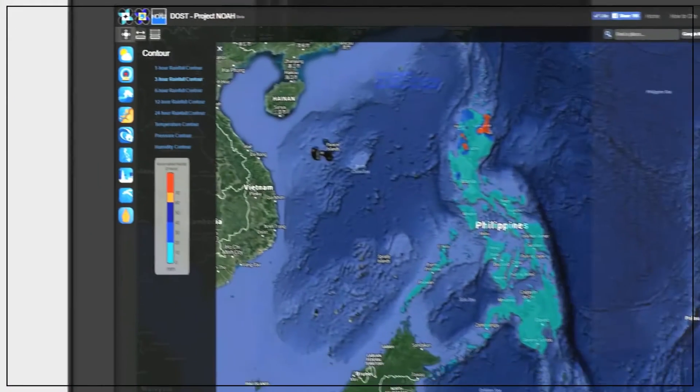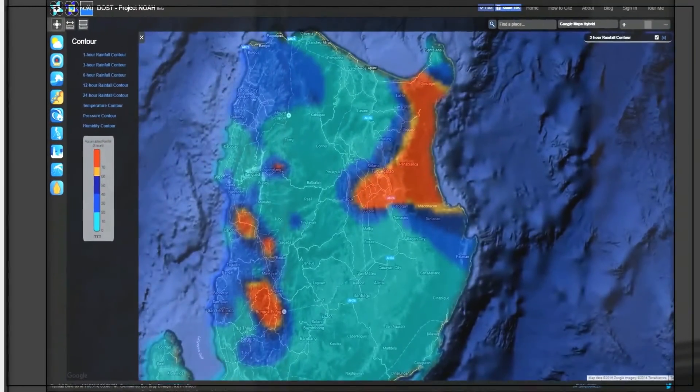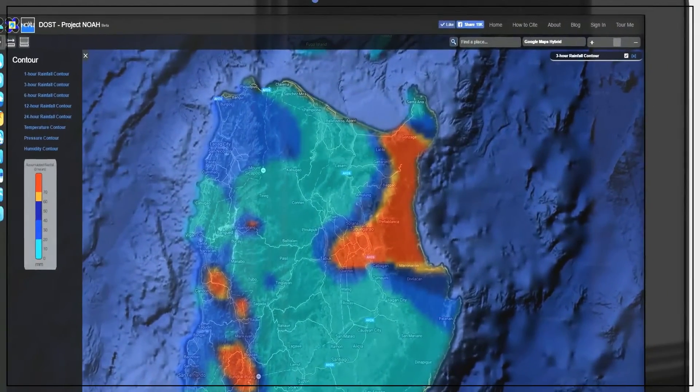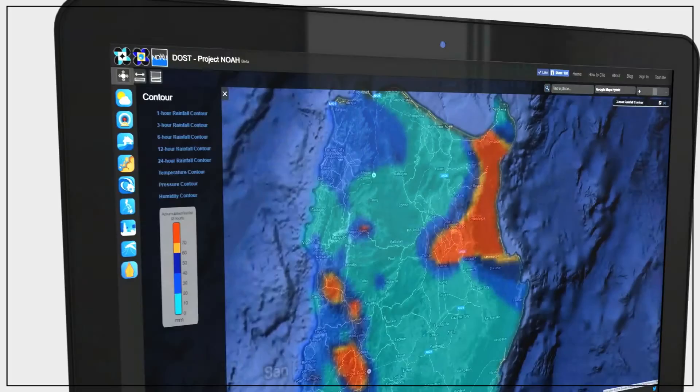If the contours still show dark blue, yellow, or red areas in the 3-hour, 6-hour, 12-hour, and 24-hour rainfall contours, check the nearby water level sensors in those areas.